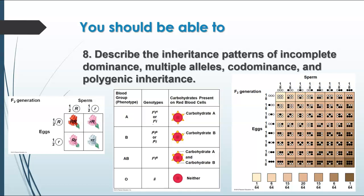Multiple alleles is when you have more than two alleles for a particular trait in the population. Human blood types are a really good example of this, because you have three different alleles: the A allele, the B allele, or the O allele. A and B are also a good example of co-dominance, because both are dominant — they both produce their product, which in this case is a carbohydrate on the surface of red blood cells. The O allele is recessive to both, so type O has neither carbohydrate. But since A and B are co-dominant, both carbohydrates are expressed and present on the surface of the cells in type AB.